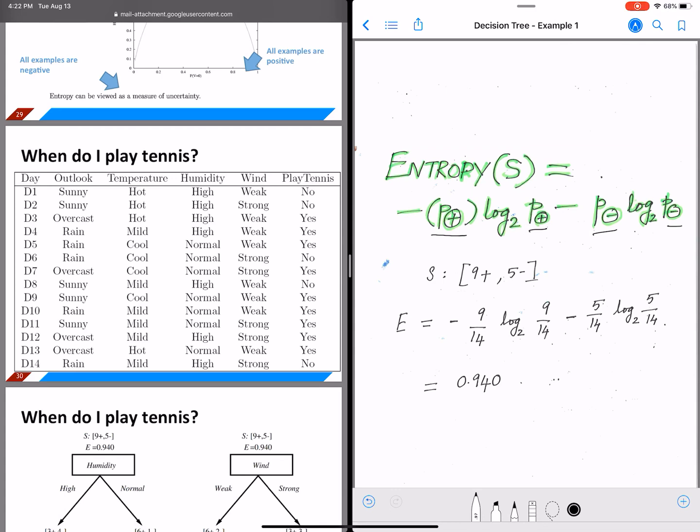So now let's see how this entropy can be calculated for an example that is on the left. So now we have different attributes: outlook, temperature, humidity, wind, and your final decision, play tennis.